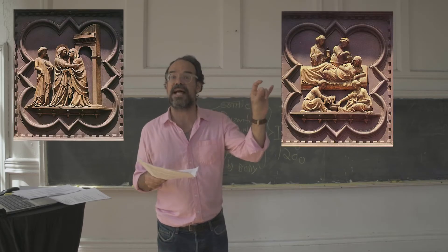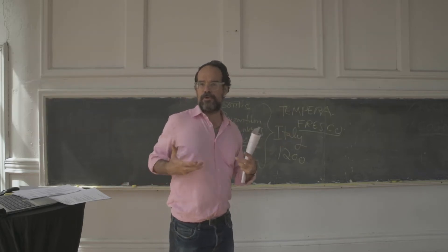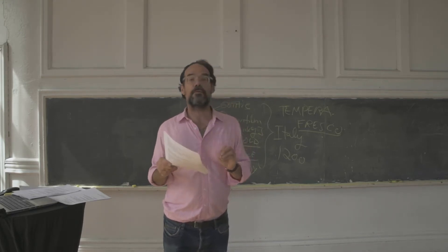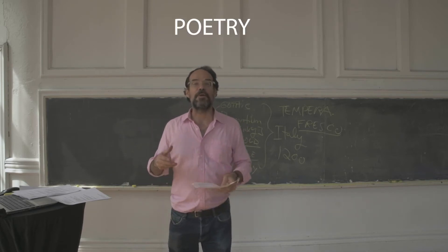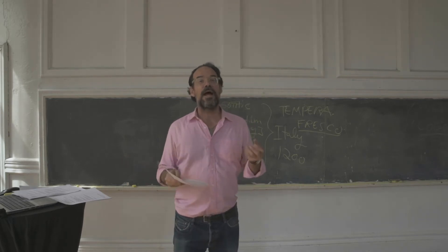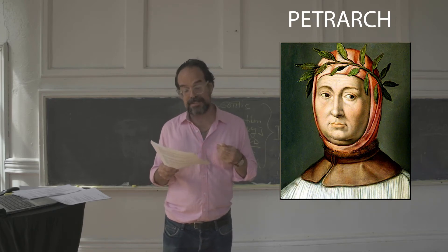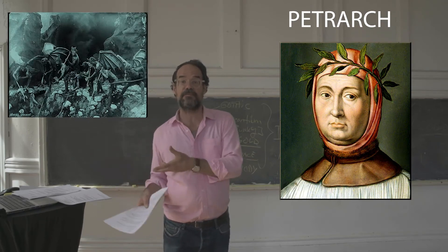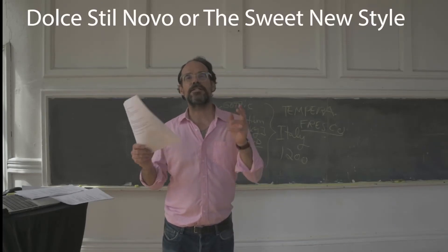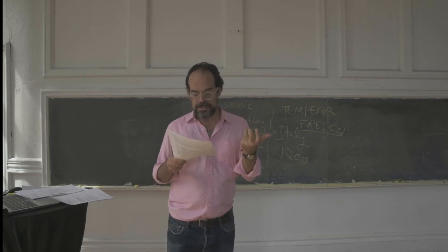We already showed you the sculpture of the Pisano brothers — how the shapes are getting rounder, the Virgin looks like a female. But we cannot talk about the Renaissance without talking about poetry, because part of the beauty of the Renaissance starts with poetry too — not just painting and sculpture. It starts with a guy called Petrarch, a poet, and later Dante — Dante's Inferno, Dante's Paradiso. We're talking about Dolce Stil Nuovo, the new sweet style — a style in poetry that's emerging.